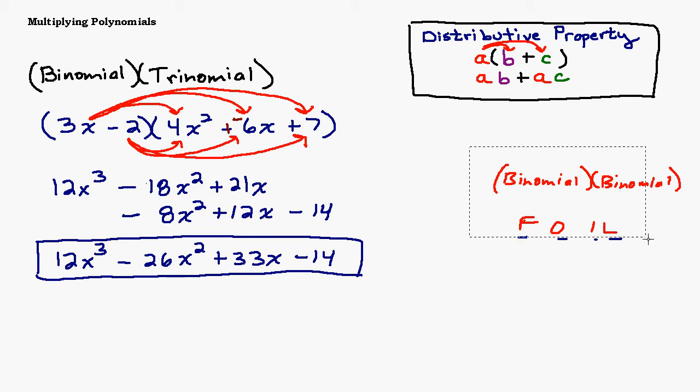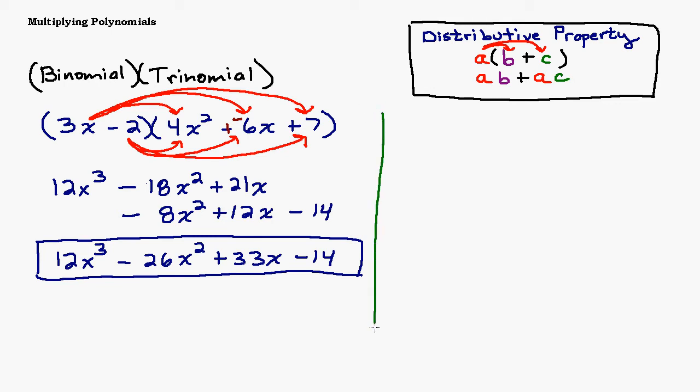Alright, let's have you try one, see how it goes. Let's do a binomial times a trinomial. How about 3y minus 6x times 4y squared minus 2xy plus 7x squared. Alright, so pause the video and give that a try, and then restart it when you're ready to check it.